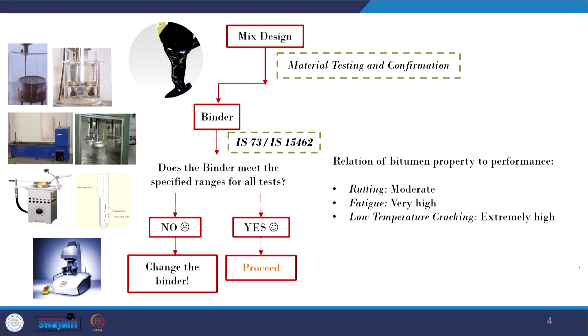In the material category, bitumen plays a very high role in controlling fatigue behavior because it is the presence of bitumen that imparts flexibility to the bituminous mixture. On the other hand, for low temperature cracking, the role of bitumen is extremely high. If the stiffness of the bitumen is very high at low temperatures, the chances of thermal cracking increase. Therefore, the viscosity, stiffness, and rheological properties of the bitumen play a very dominant role in controlling the occurrence of low temperature cracking in hot mix asphalt.